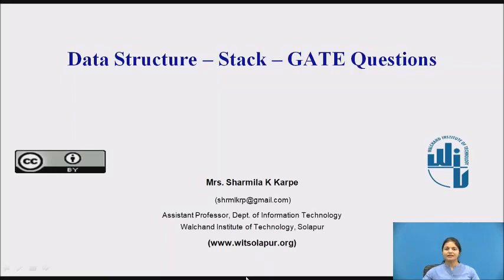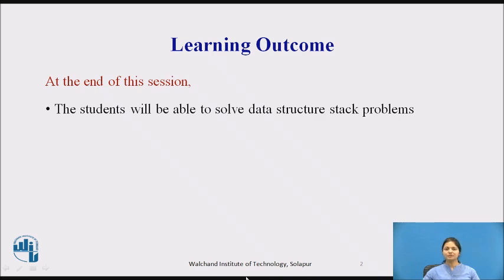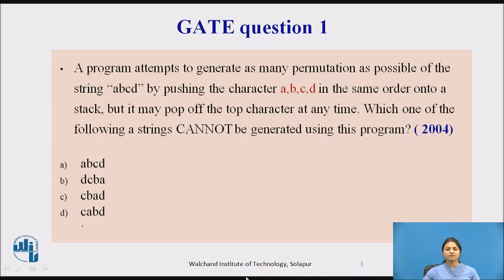Welcome to the session on data structure stack GATE questions. At the end of this session, the student will be able to solve data structure stack problems. The first question: a program attempts to generate as many permutations as possible of the string 'abcd' by pushing the characters a, b, c, and d in the same order onto the stack, but it may pop the top character at any time. Which one of the following strings cannot be generated using this program?